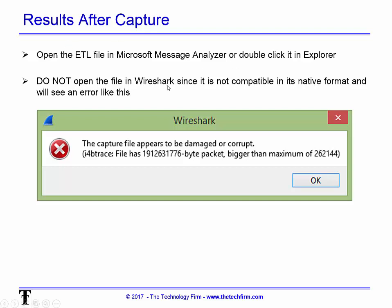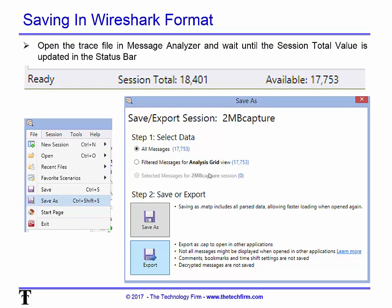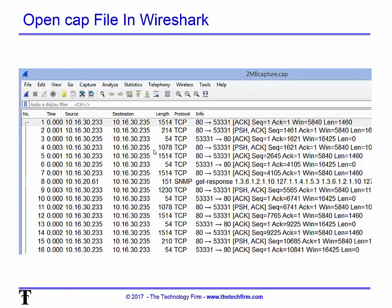Do not open the ETL file directly in Wireshark — it's not compatible in its native format. You will see an error if you try, and if you captured from a non-wired Ethernet port and converted it, you might just see a blank screen. When you open the trace file in Message Analyzer, just wait — it can take up to a minute to process all the packets. Then go to File > Save As > Export to create a .cap file.